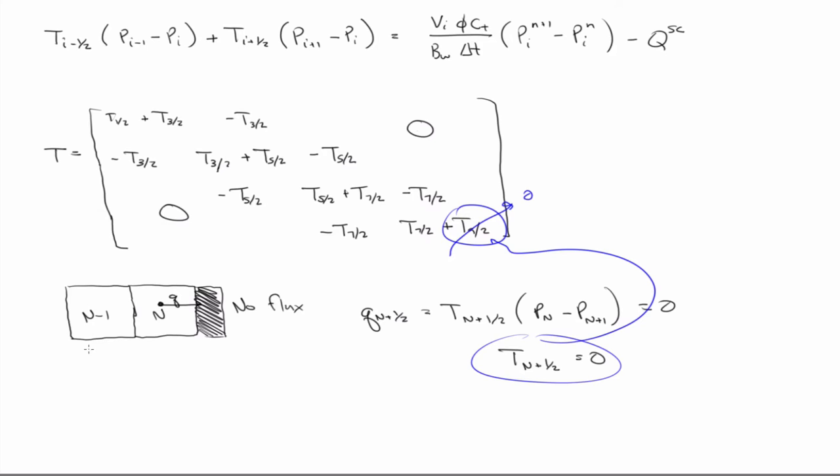So this would be for a no-flow, just to be clear, on the right of our reservoir. So just, what would it be if it was no-flow on the left? The t one-half would be zero.